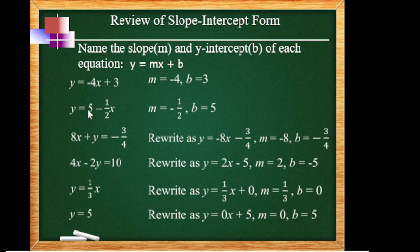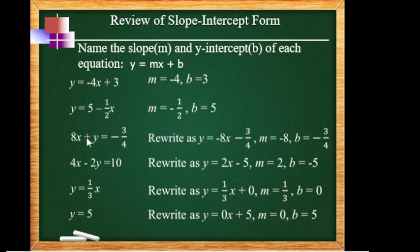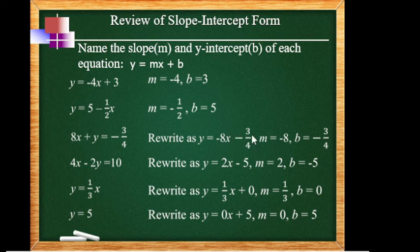For number 2, y = 5 minus one-half x. Just rearrange it: it becomes negative one-half x plus 5. So ang m natin ay negative one-half, which is the slope, and the y-intercept is 5. Number 3: 8x plus y = three-fourths. We need to transpose 8x to the right, so it becomes y = negative 8x minus three-fourths. So the slope is negative 8 and b or y-intercept is negative three-fourths.